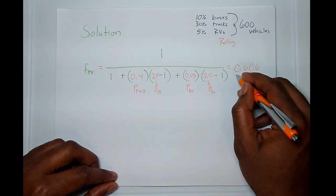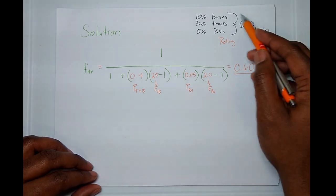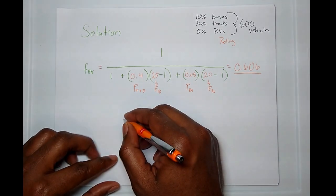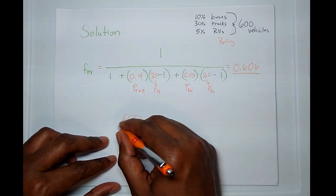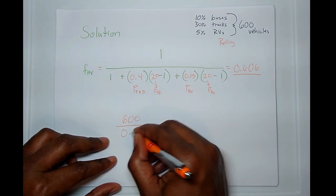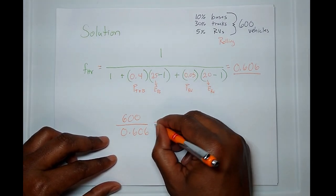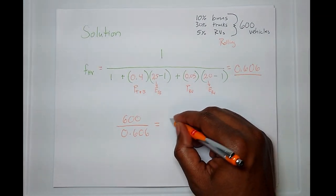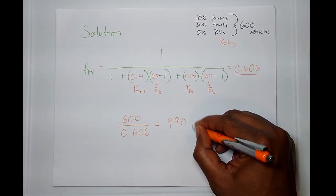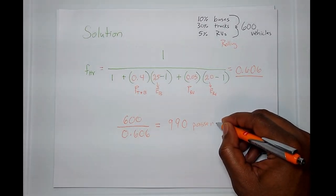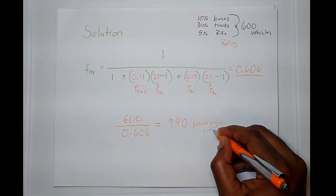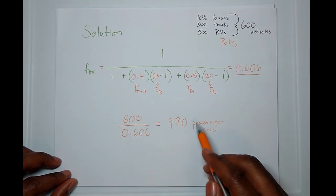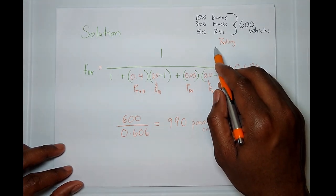That's my heavy vehicle factor. I wanted to convert all 600 vehicles into being represented just by passenger cars. So I take 600 and divide it by 0.606, which gives me the equivalent of 990 passenger cars. Those 600 vehicles, made up of this traffic mix, are equivalent to 990 passenger cars traveling on rolling terrain.